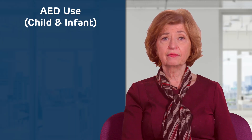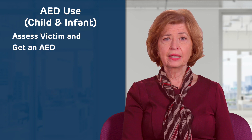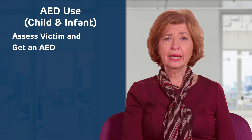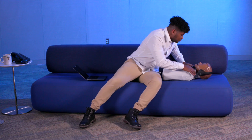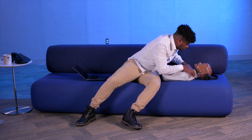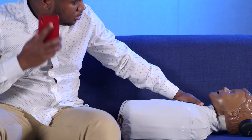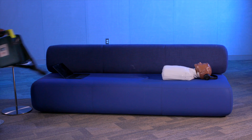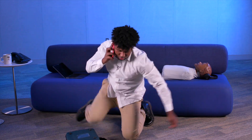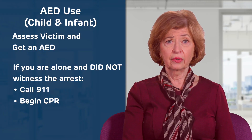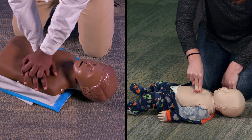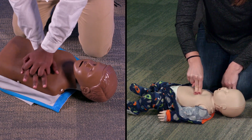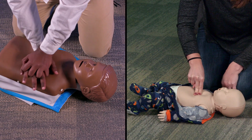AED use for a child or infant: Using an AED on a child or infant is very similar to an adult. If you witness a child collapse and they are unresponsive and not breathing, call 911 and retrieve an available AED immediately while someone begins CPR. If you are alone and find the child on the ground without witnessing the arrest, call 911 on speakerphone and begin CPR. Perform two minutes of chest compressions and rescue breaths before you leave to retrieve an available AED.